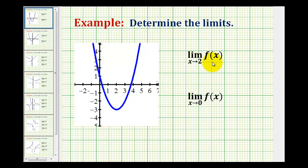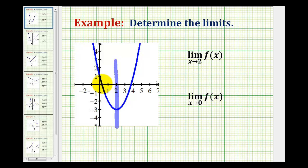When we talk about a function value, we're talking about a y value. It's helpful to sketch a vertical line at x equals 2 so we know exactly where we're approaching. We're approaching this vertical line x equals 2 along the function from the left side and the right side, and we want to know if we're approaching the same y value. We can see we're approaching this point on the function where the function value is equal to negative 3. Therefore, the limit as x approaches 2 of f of x is equal to negative 3.